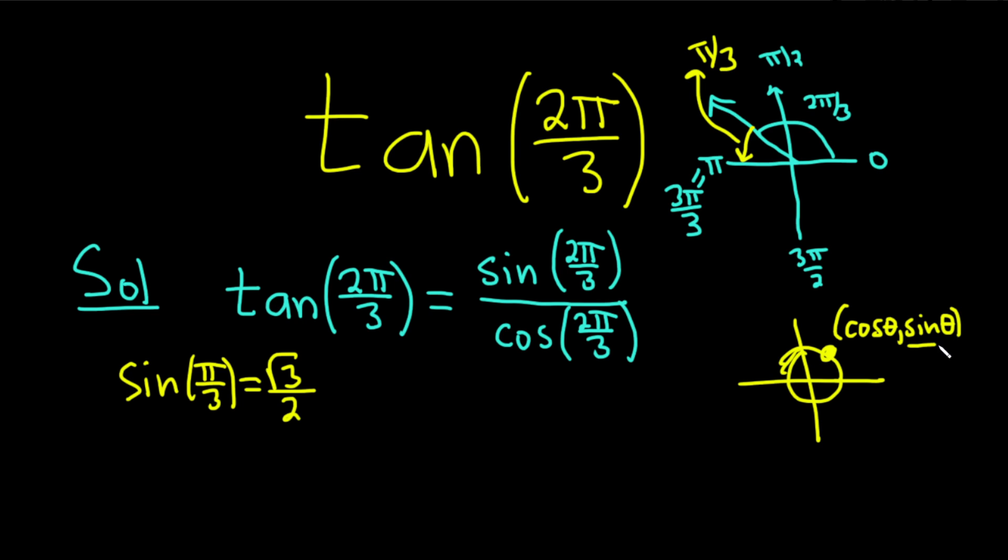And every ordered pair on this circle has the form cosine θ comma sine θ. So on the unit circle, sine is the y-coordinate. So the y-coordinate here is positive, and sine is the y-coordinate, so it's positive. So therefore, the sine of 2π over 3 is just going to be, I'll write it here for completeness, it's just going to be the square root of 3 over 2. It's going to be the same thing. So this is the square root of 3 over 2.